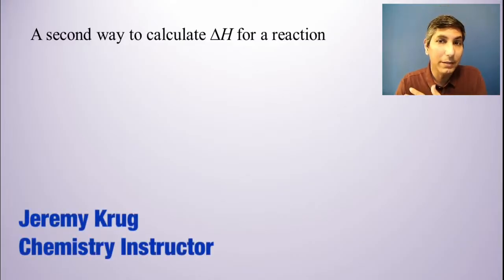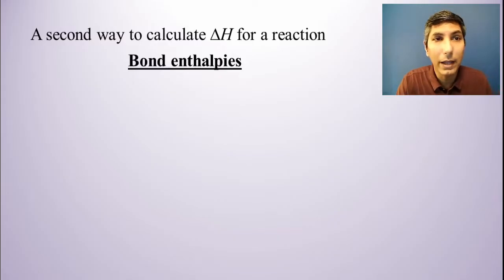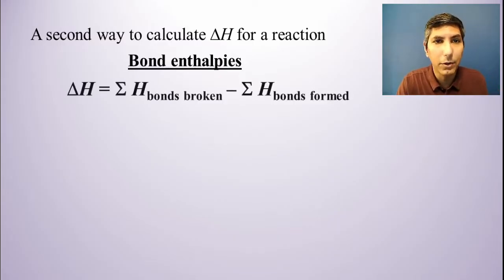Now in the last couple of videos, we learned how to calculate delta H experimentally using Q equals MC delta T, doing a stoichiometry calculation, and then dividing kilojoules by moles. Well in this one, we're going to look at how we can actually determine that delta H using some data that we can get very easily, very readily, just online or in a textbook.